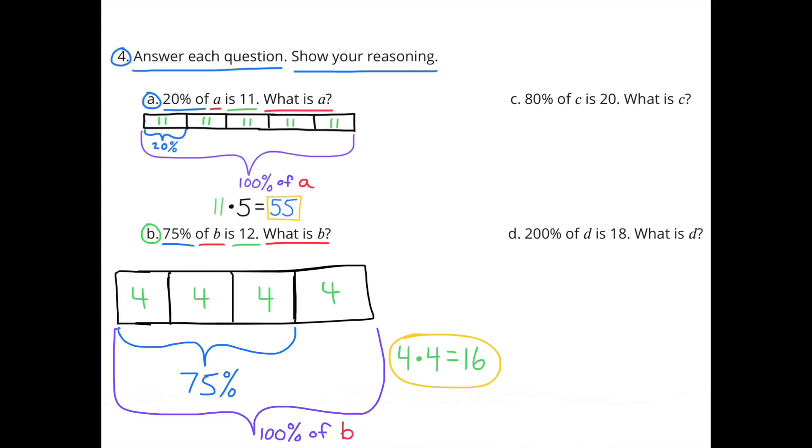Part B: 75% of B is 12. What is B? In my diagram, I have 100% divided into four sections. Inside each of the four sections, I've put four, because 75% is 3 fourths. So three out of the four boxes needs to be worth 12. 4 plus 4 plus 4, which represents 75%, is equal to 12. 100% would be equal to 16. So B equals 16, or 4 times 4 equals 16.